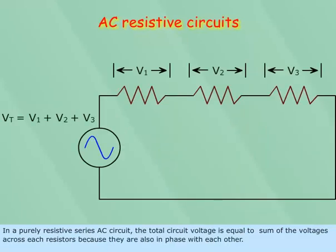In a purely resistive series AC circuit, the total circuit voltage is equal to sum of the voltages across each resistors because they are also in phase with each other.